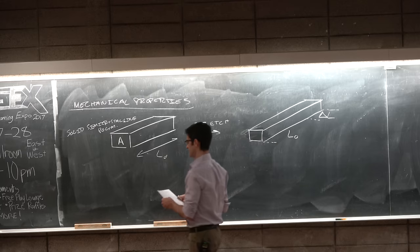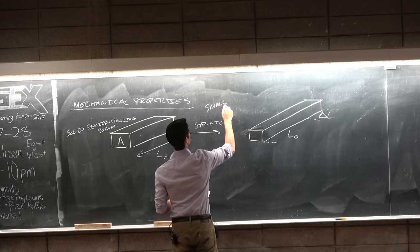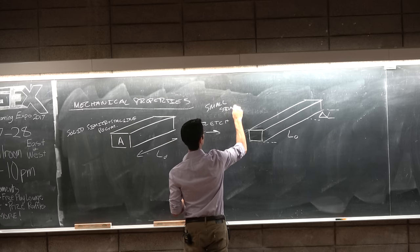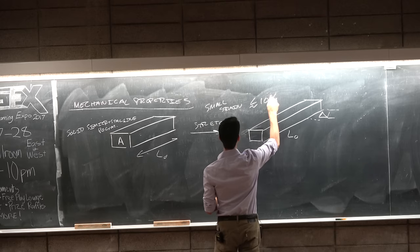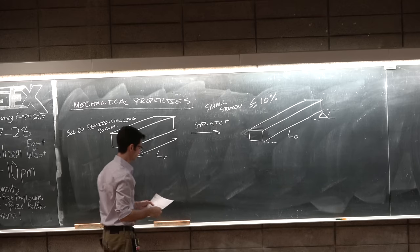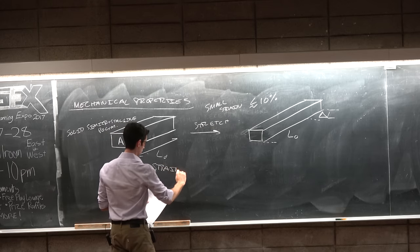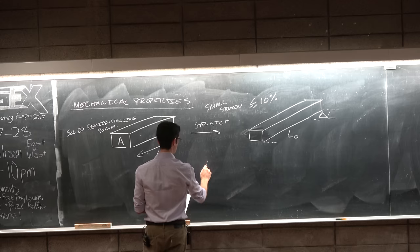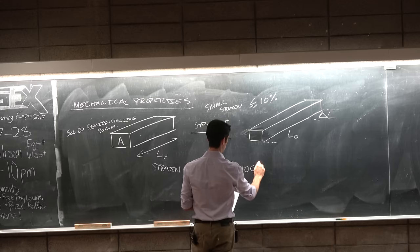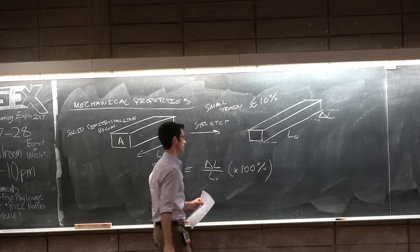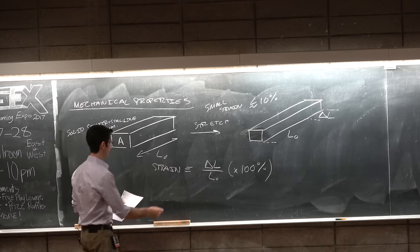And we stretch it. Now what happens is that the cross-sectional area shrinks a little bit and the length increases by some amount. And let's say that this is L naught and this distance is delta L. Then we can define, now this is for small, so for small strains less than about or approximately equal to about 10%, so the strain is defined as delta L over L naught times 100%. It could be as a fraction or as a percent. Make sure you know what you're looking at. And the stress is the force per unit area that it took to accomplish this deformation.